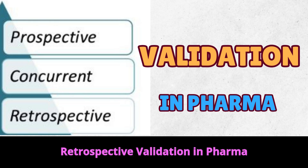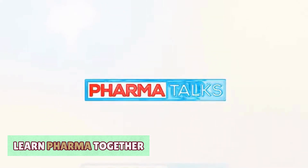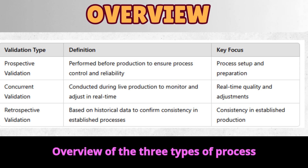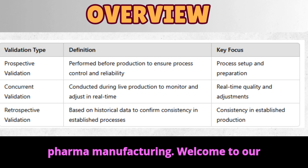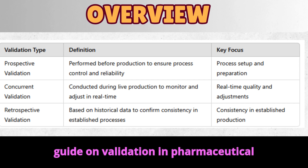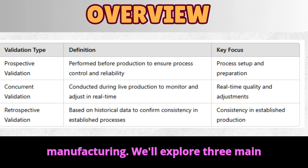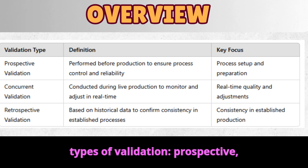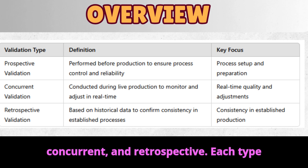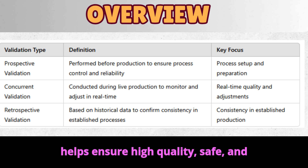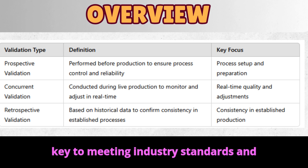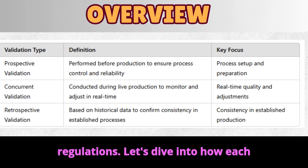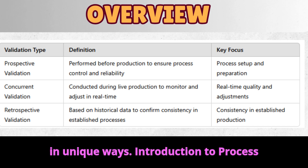Prospective, Concurrent, and Retrospective Validation in Pharma. Overview of the three types of process validation essential to ensuring consistent quality and compliance in pharma manufacturing. Welcome to our guide on validation in pharmaceutical manufacturing. We'll explore three main types of validation: prospective, concurrent, and retrospective. Each type helps ensure high quality, safe, and consistent drug production. Validation is key to meeting industry standards and regulations.